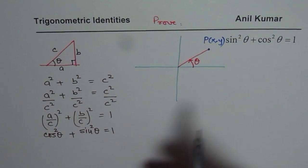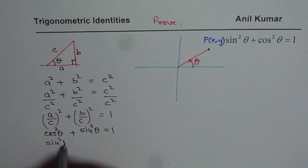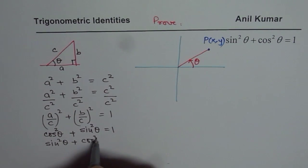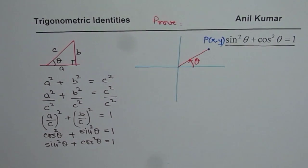So that is the basic identity which you may write like this or like this. It is one and the same thing. Commutative law. So cos square theta equals to 1. So that is how we prove this identity.